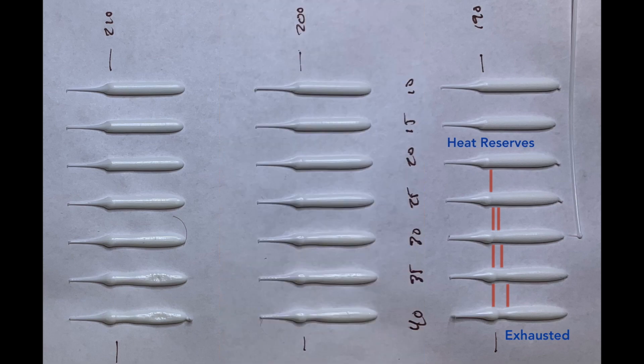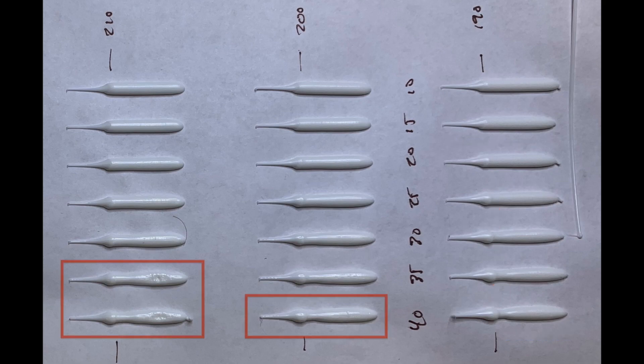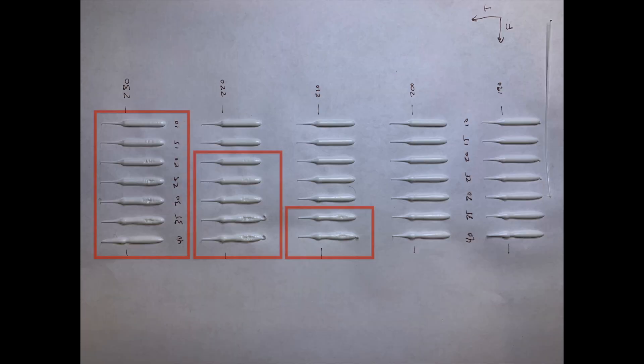You would think that increasing the temperature of the hot end would solve this. And it does to a very limited degree. But here we see artifacts begin to form at higher temperatures. And if we zoom out, we see that the artifacts creep into the slower extrusion rates too.